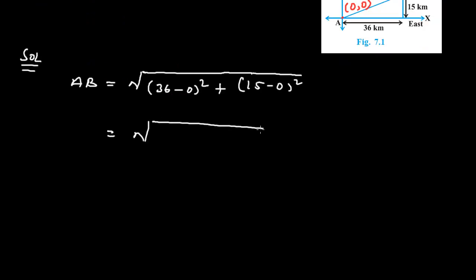This equals 36² plus 15². We know that 36² equals 1296 and 15² equals 225. If we add 1296 and 225, we get 1521.